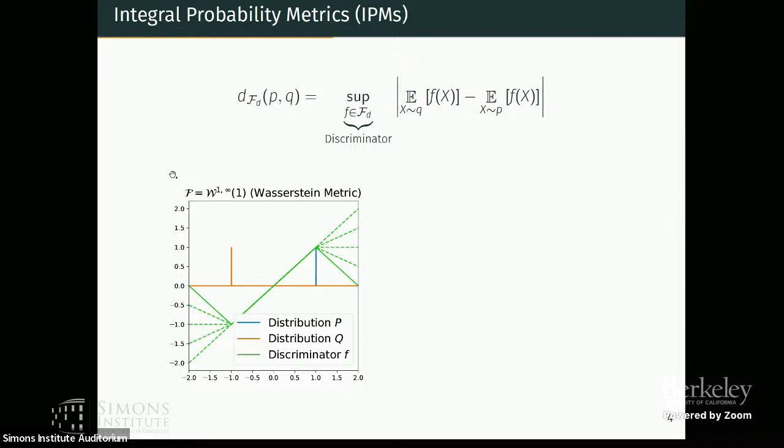So here is a small example of this. If you have two singular distributions in orange and blue, then the green functions are the one Lipschitz functions that maximize this discriminator loss and give you the Wasserstein distance between these two distributions.